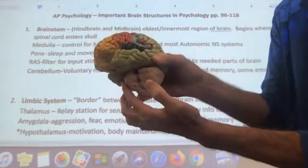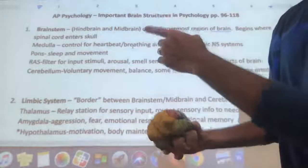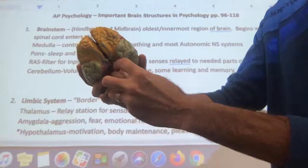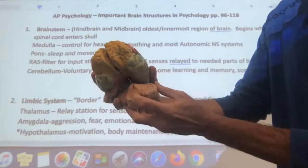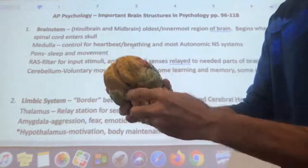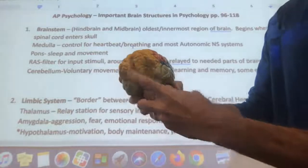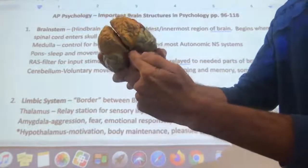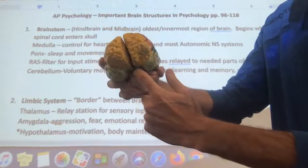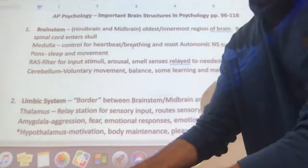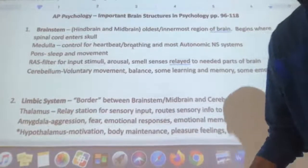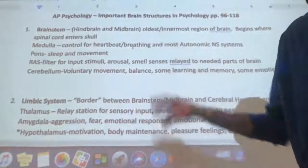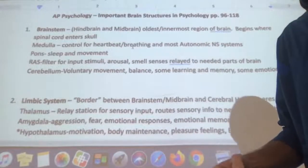The next rounded structure is the pons, which deals with sleep and movement. Then up at the top is our midbrain — the reticular activating system, or reticular formation — which is very small. It basically acts as the gatekeeper for stimuli coming up from the spinal cord. Any sensory information travels through the medulla and pons, reaches the RAS, and the RAS determines whether it's a strong enough or important enough stimulus to send on into the brain. It deals with arousal and our sense of smell.